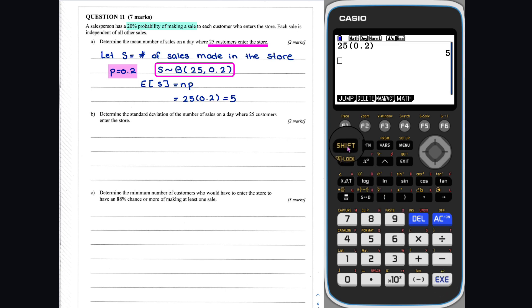Question 11 Part B: The standard deviation of a binomial distribution can be calculated using the answer to Part A and the fact that p is equal to 0.2. We get the standard deviation of the number of sales on a day where 25 customers enter the store is 2.